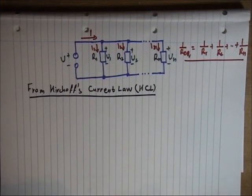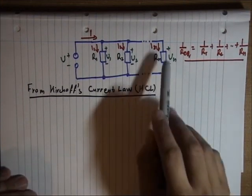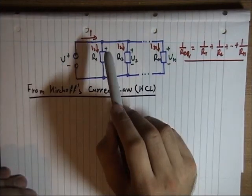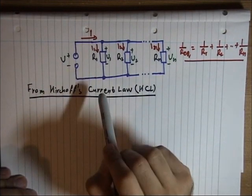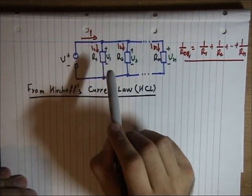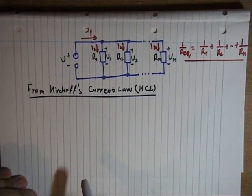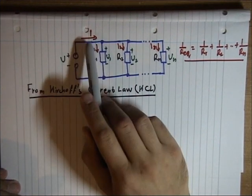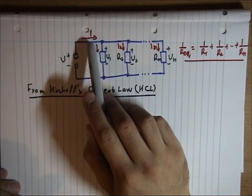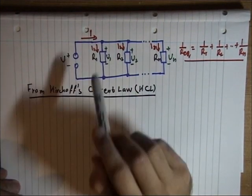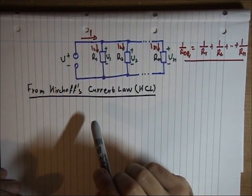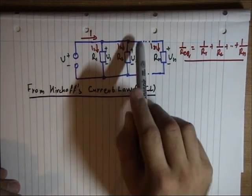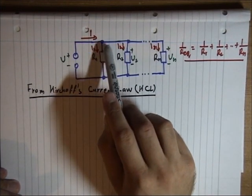This law says that in a network at one individual point, the sum of the currents at that point is equal to zero. Basically, what this means is that all the currents that enter that node or point have the same value as all the currents exiting that point.